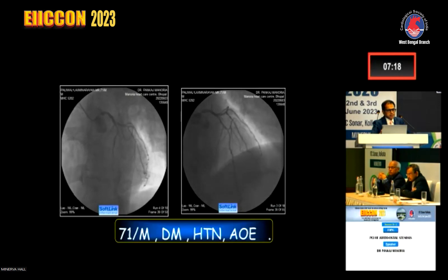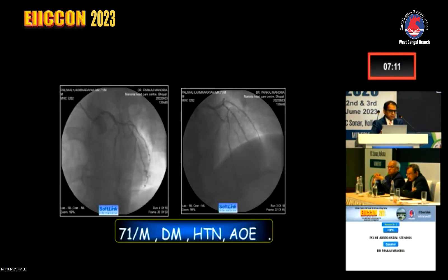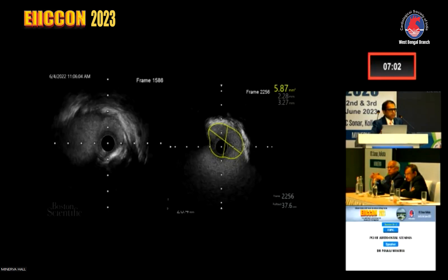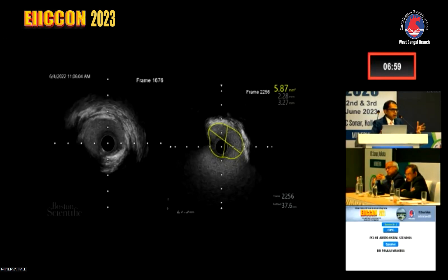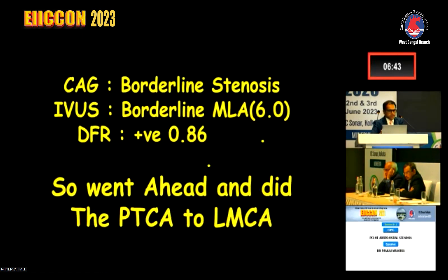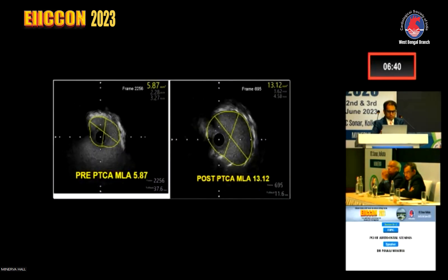Second case: a 71-year-old gentleman, diabetic, hypertensive, angina on effort, on medical treatment. Angiography again showed an aorto-ostial lesion. We did IVUS and found the MLA was around 5.8 — again an intermediate lesion. We did physiologic testing, and this time the resting parameter was less than 0.89 — it was 0.83 — showing significant ischemia. So we went ahead and did angioplasty and stenting to the left main ostium. Pre-PCI MLA was 5.86 and post-PCI MLA was 13.12. Defining these lesions is very important.